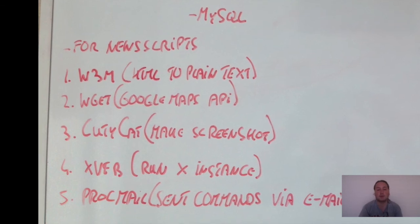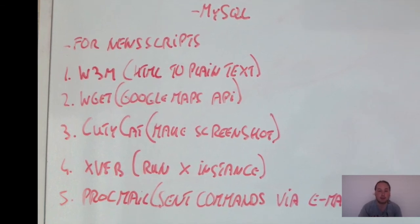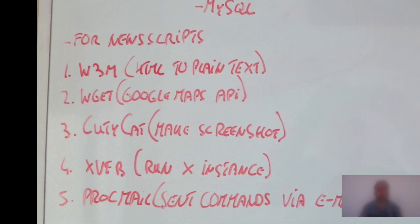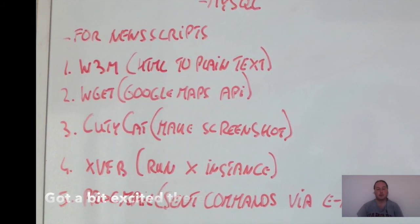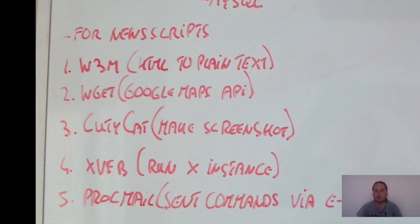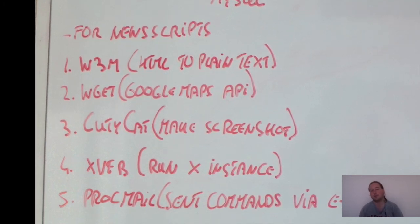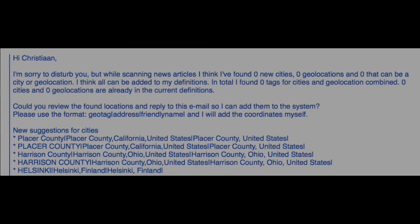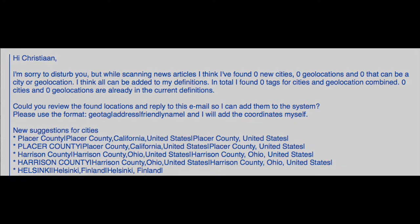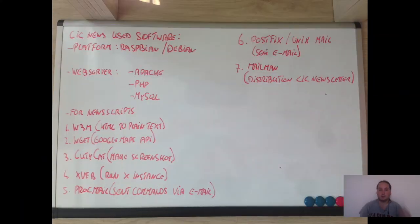The fourth is Xvfb, which is used to run virtual displays in Unix and is necessary to run CutyCapt to make the screenshots. The fifth is procmail, a mail delivery agent. I'm using it to filter email coming to my mail server — by using procmail I can send new geo definitions to my mail server, procmail processes them, and adds the new geo definitions to my libraries.